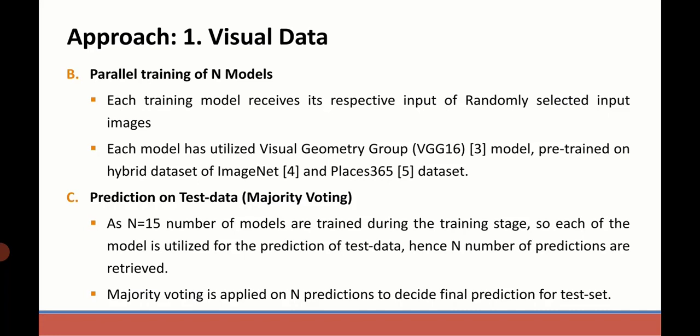Finally, these models were used for the prediction of test data. All 15 predictions were combined and majority voting was applied for the final classification result for visual data.